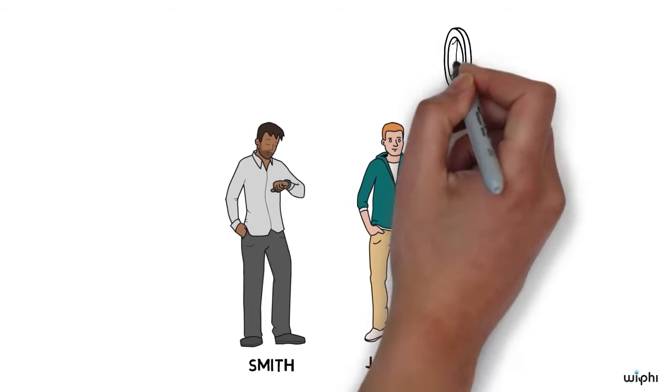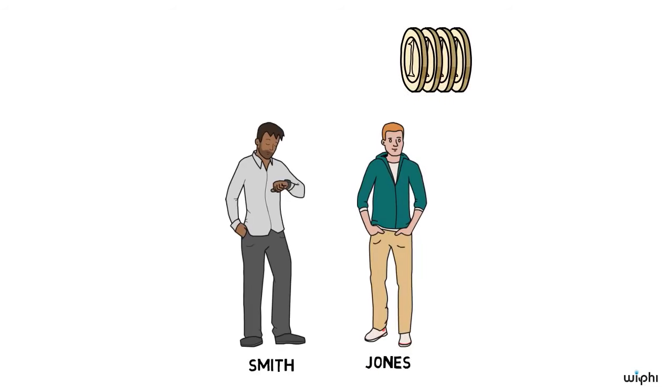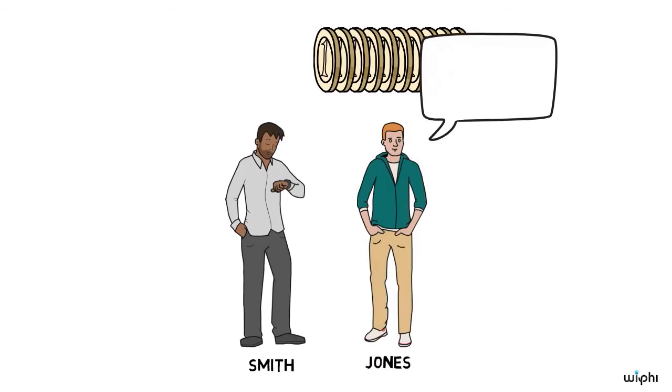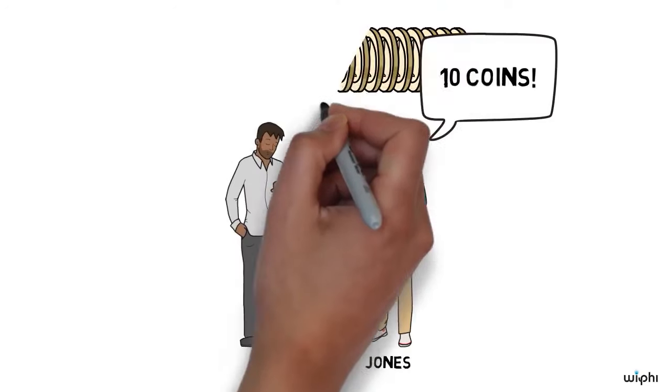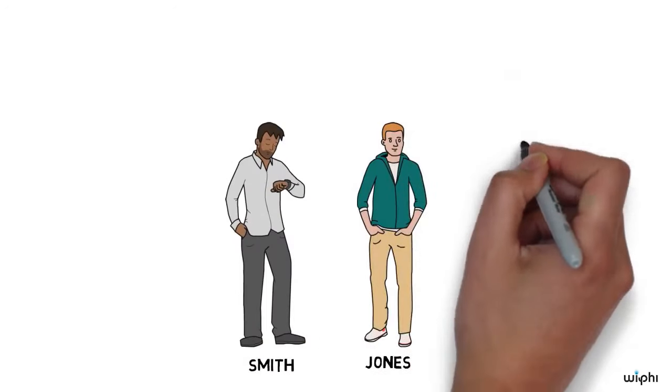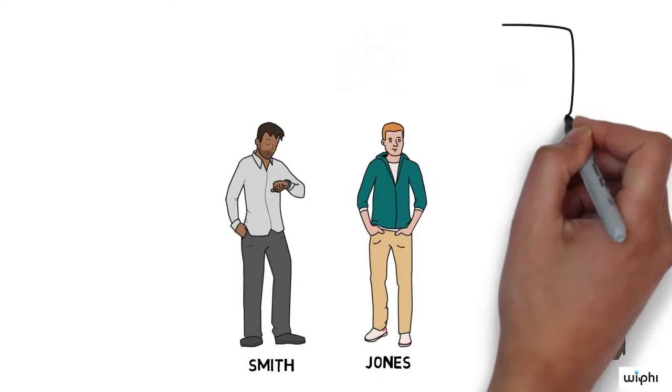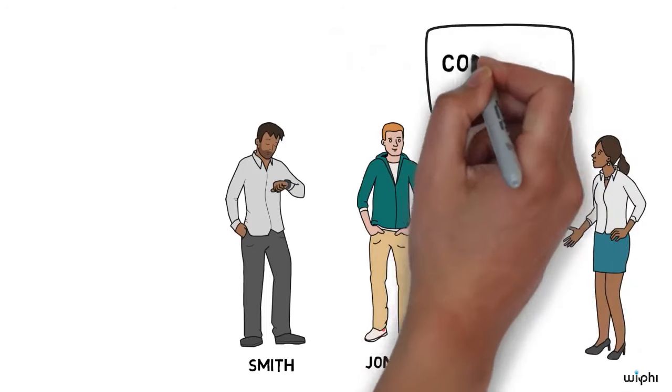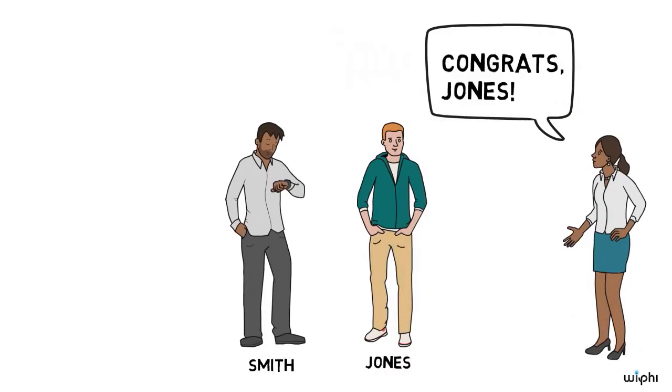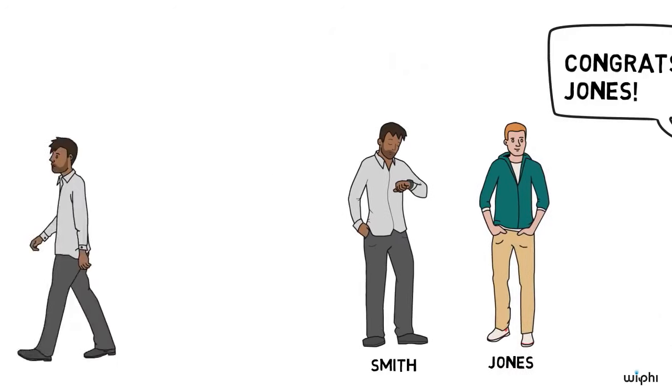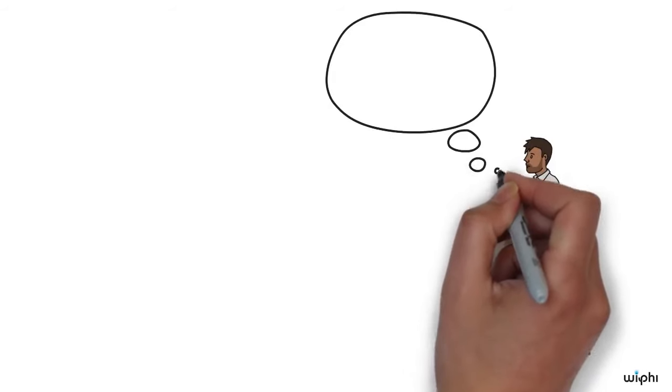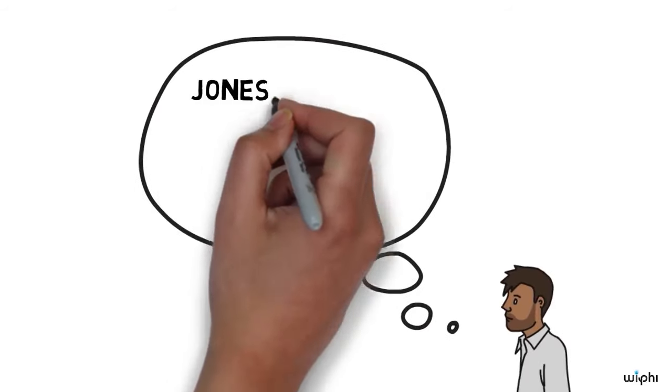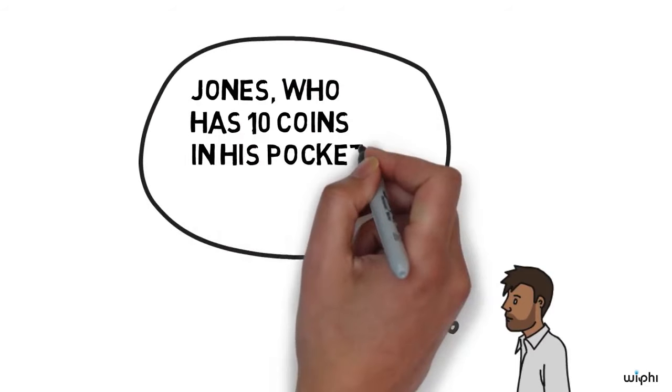As they're maybe starting to get bored, Jones counts out loud how many coins he has in his pocket. Exactly 10, they discover. Jones puts the 10 coins back in his pocket as the president of the company comes into the room. The president congratulates Jones, announcing that he's a great fit for the position. As Smith leaves the room disappointed, here's something that he believes. Jones, who has 10 coins in his pocket, will get the job.